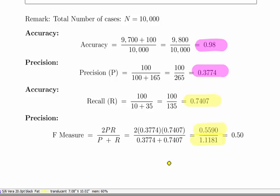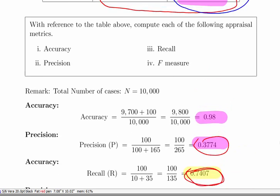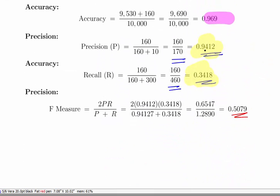When we work that out: 2 times PR, 2 times 0.3774 times 0.7407, that gives us 0.5590. P plus R, just working that out: 1.1181. I think that actually is very close to 50% as well if we work it out in the calculator. So again, this downgrades the overall score. Like, one of them is not particularly good, and one of them is not particularly bad, so we get a sort of average score in that case.